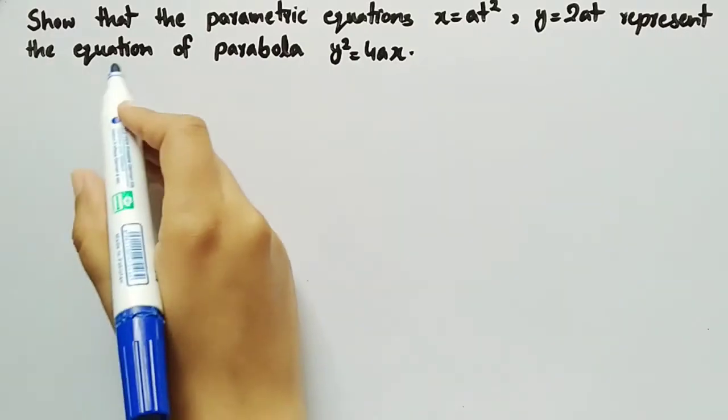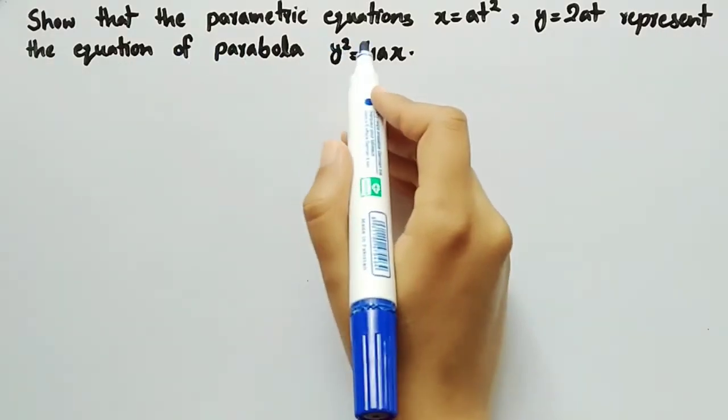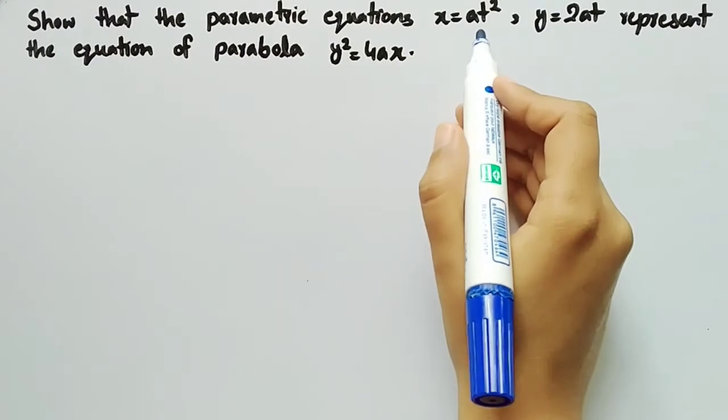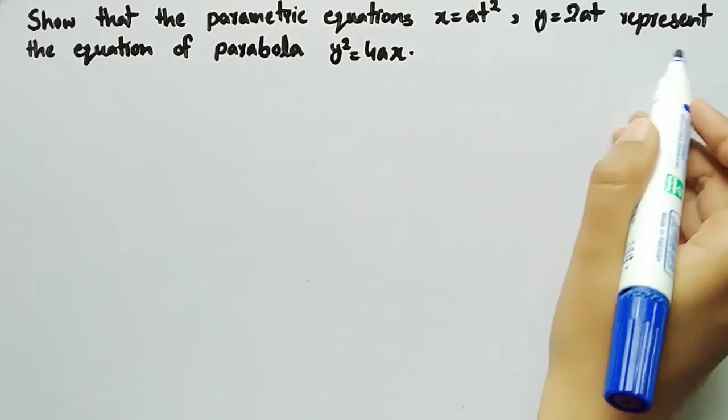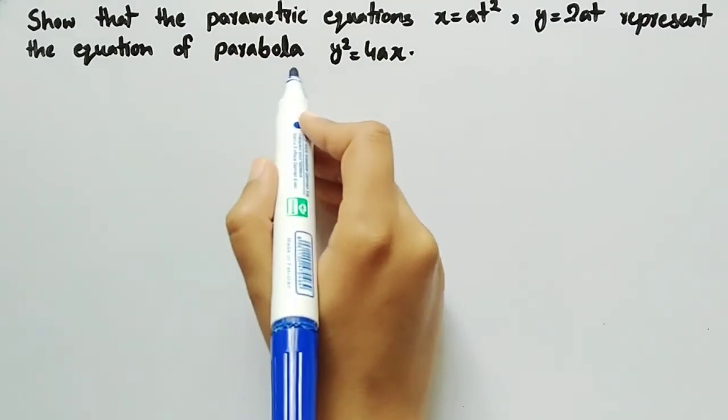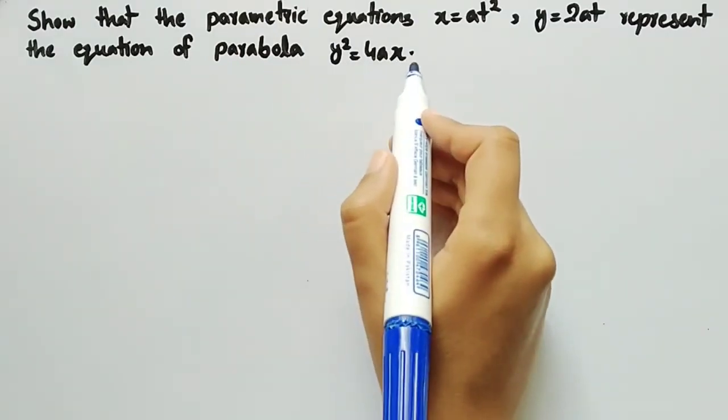In this video, we will show that the parametric equations x equals a t squared and y equals 2at represent the equation of parabola y squared equals 4ax.